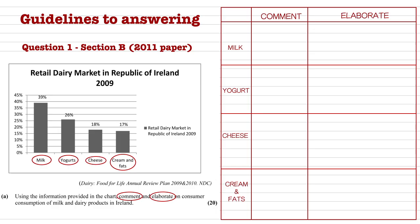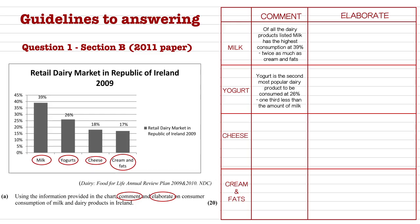Give practical answers based on the information in front of you. For example, milk is the most popular dairy product consumed at 39%, making it twice as popular as cream and fats at 17%. Continue like this for the other listed products.